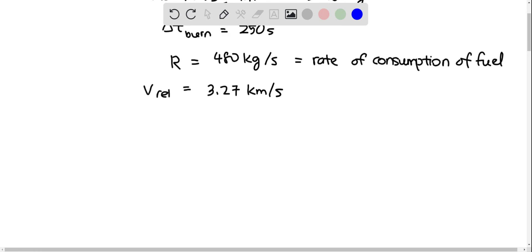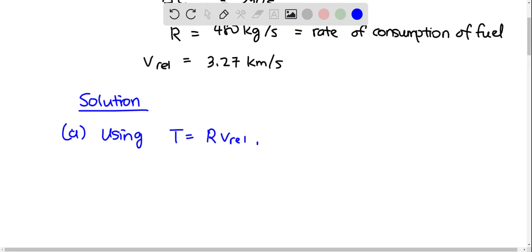So in part A, to find the thrust, you will be using T equals R times V relative. So thrust is equal to 480 times 3.27 times 10 to the 3. And you get 1.57 times 10 to the 6 newtons.